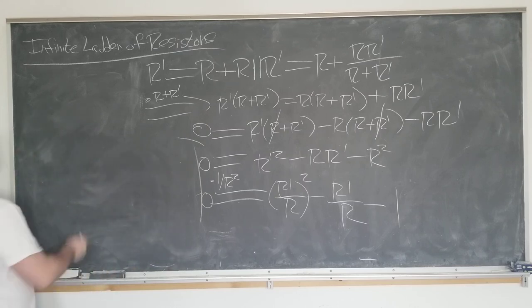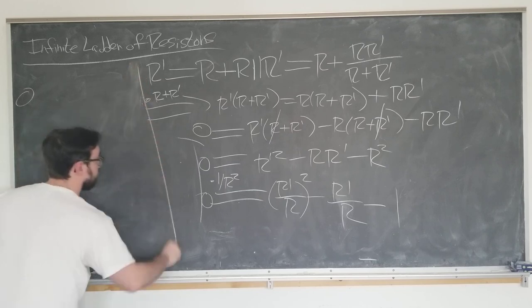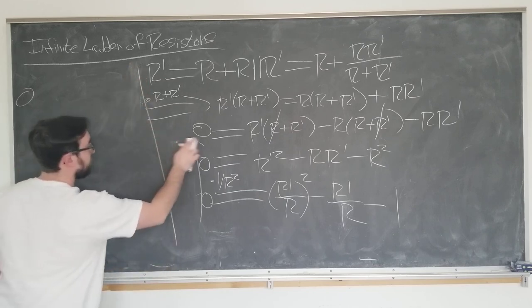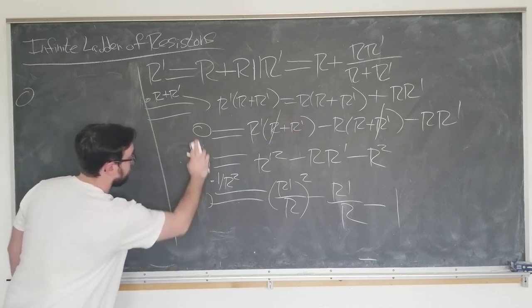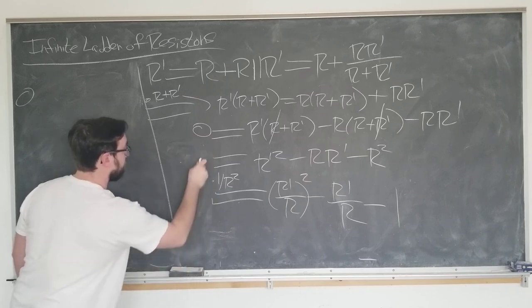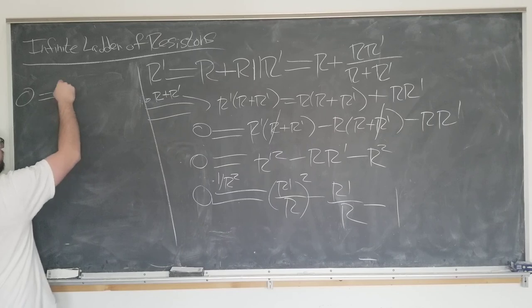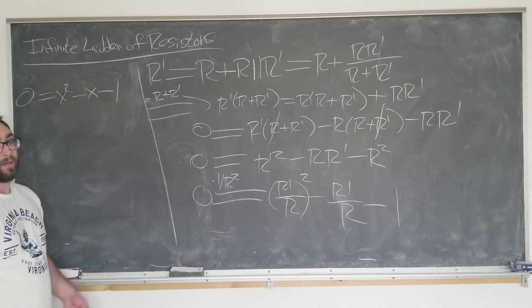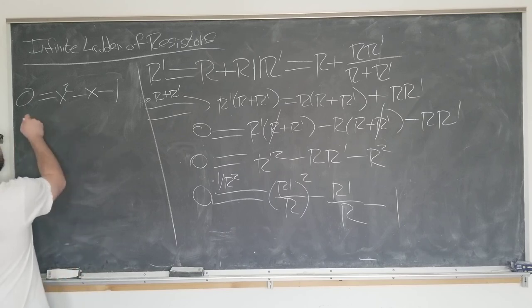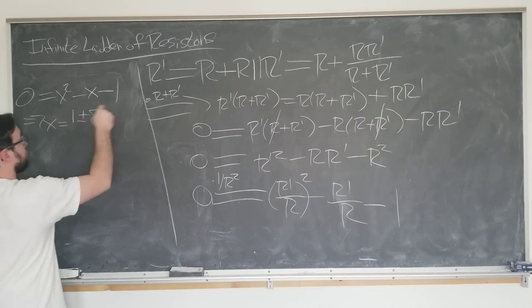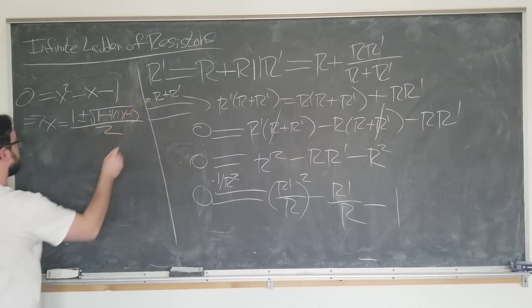So let's solve the quadratic. We have something equal to zero, a quadratic equation here. We have zero equals something which we're calling x squared minus x minus one. And we all recall how to solve these from high school. This implies that x equals one plus or minus the square root of one minus four times one times negative one, all over two.